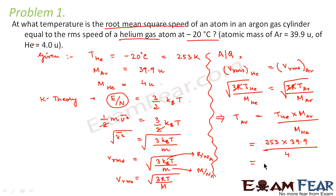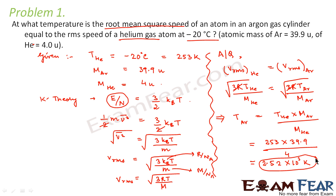This comes out to be 2.52 × 10³ Kelvin. So this is the temperature at which the RMS velocity of argon will equal that of helium. Now let us go ahead and look at another problem.